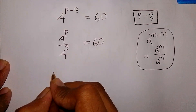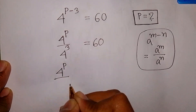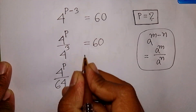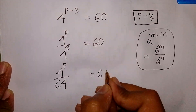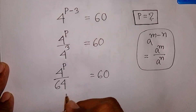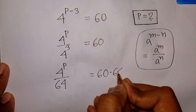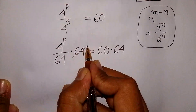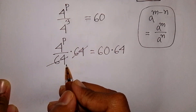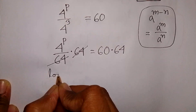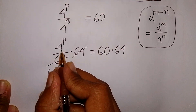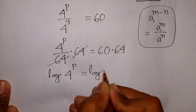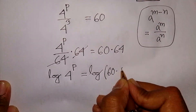So 4 power p over 4 power 3 is the same as 4 power p over 64, which is equal to 60. Now we multiply by 64 on both sides. This 64 will be cancelled out, and now we can apply log on both sides. Log of 4 power p is equal to log of 60 times 64.